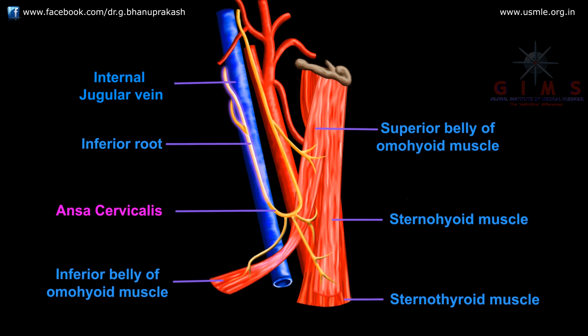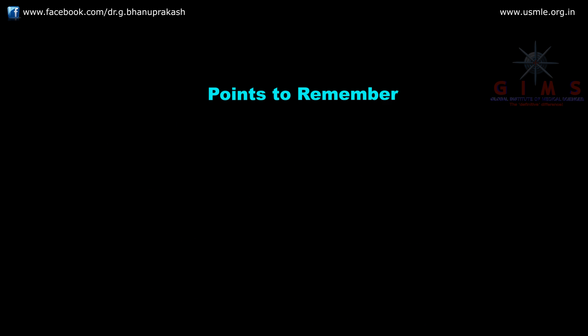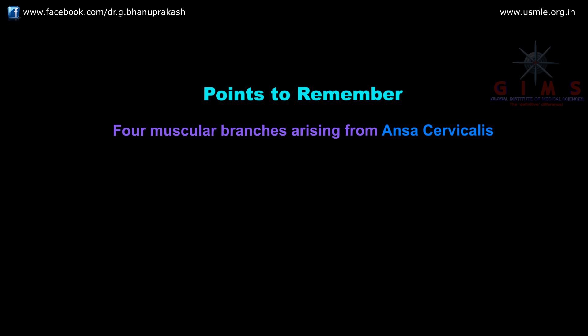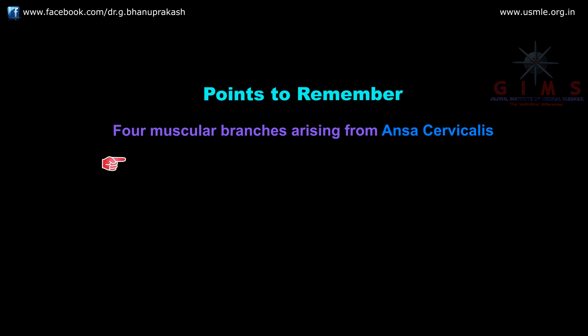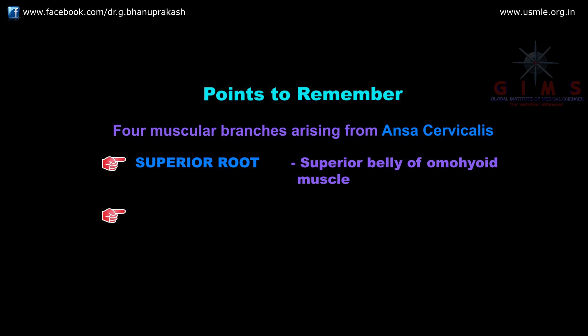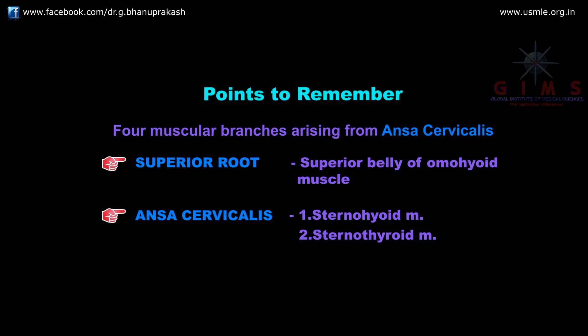The inferior root does not give any muscular branches. So, remember there are totally four muscular branches arising from the ansa cervicalis: one from the superior root and three from the ansa cervicalis itself. The superior root gives a branch to the superior belly of the omohyoid, and the ansa cervicalis gives off three branches — sternohyoid, sternothyroid, and the inferior belly of the omohyoid muscle.